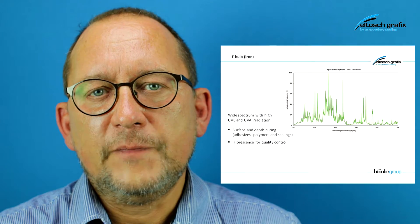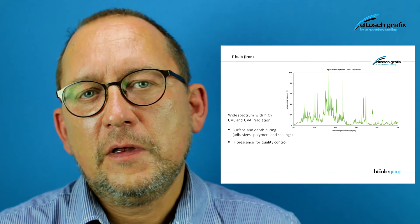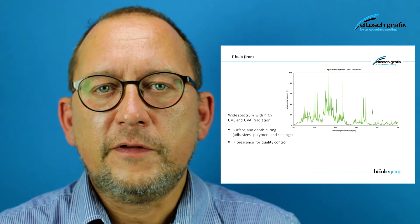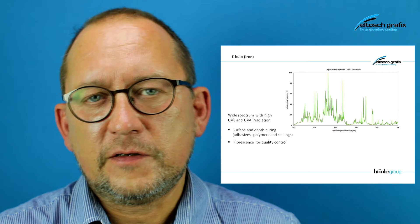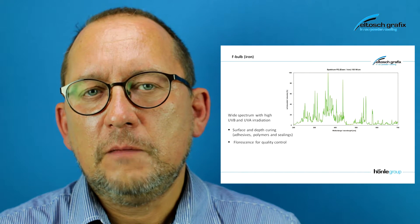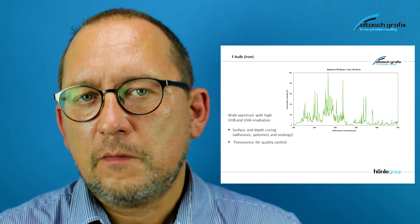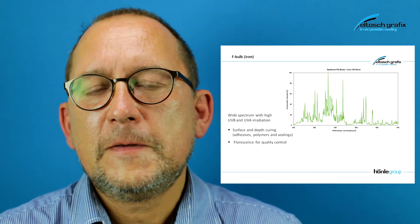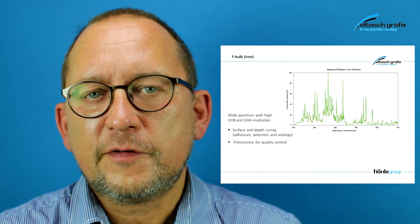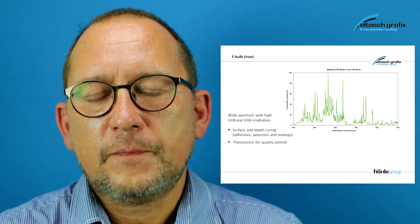If we add certain metals to the mercury in small amounts — we are talking about doping — then we can adapt the spectrum of the UV bulb to our requirements. For example, if you include iron into the bulb, you have a spectrum which is more in the UV-B and UV-A sector. That is better for in-depth curing of higher and thicker layers, and these bulbs are also used for highly reactive UV inks.